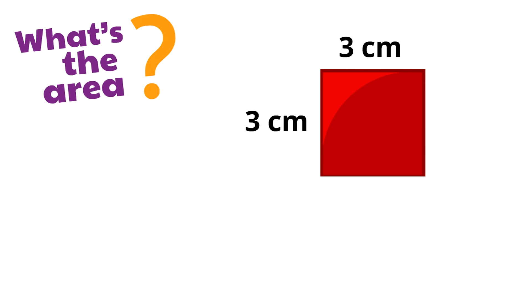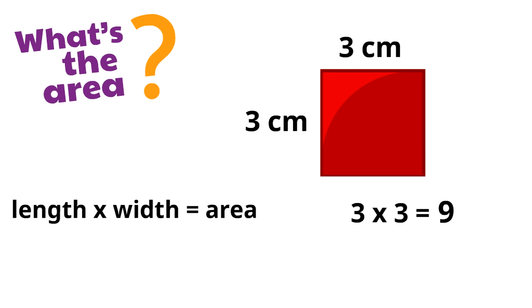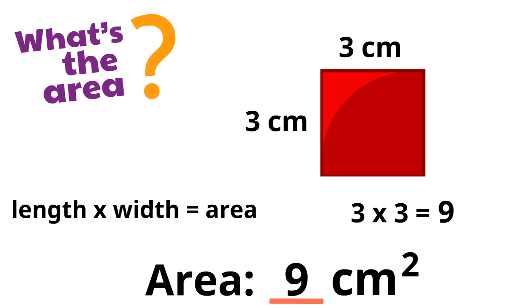Why don't we try another one? Let's say we want to find the area of this square. It is 3 centimeters long on each side. Remember, to find the area of a square or a rectangle, all we have to do is multiply the length times the width. For a square, the length and the width are the same size. The length times the width is the area, so we just have to multiply. We would write 3 times 3. What is 3 times 3? 3 times 3 is 9. The area of this square is 9 centimeters squared. That little 2 next to centimeters means squared — it tells us that the square has 9 square centimeters of space inside.